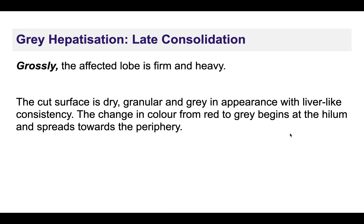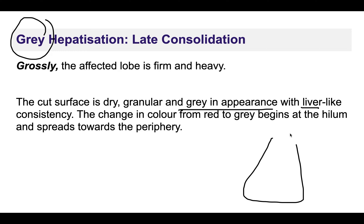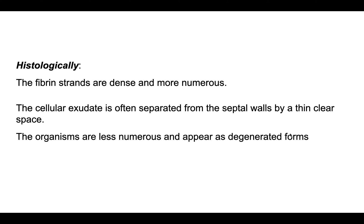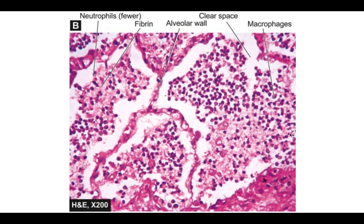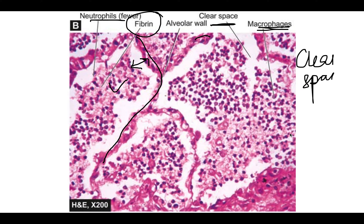In gray hepatization, the lobe remains heavy with a liver-like consistency but is now gray in color. The cut surface is dry, granular, and gray. The color change from red to gray occurs from the hilum to the periphery. Histologically, fibrin increases further, neutrophils decrease, macrophages begin to appear, and a clear space becomes visible between the alveolar wall and the cellular exudate.